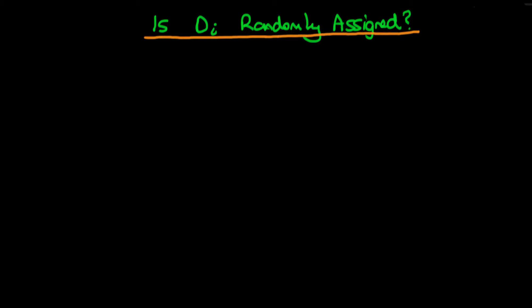In this video we're going to talk about how we could determine if a particular treatment was randomly assigned, given that we're not dealing in experimental conditions. We're going to continue using the example we've already used: is there an effect of infrastructure spending to lower the level of violence within a conflict area? Let's say we didn't know whether states were randomly assigned or assigned with some pre-existing criteria to receive infrastructure spending. How might we determine if the level of infrastructure spending a state received was in fact randomly assigned?